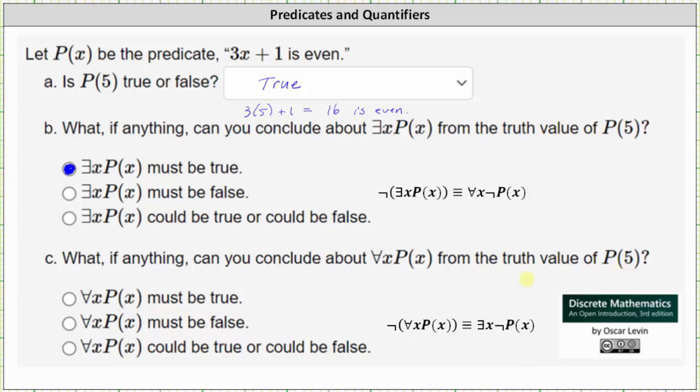Well, just because we know from part b there exists an x such that P of x is true, we don't know for every x, P of x is true, or for every x, 3x plus 1 is even.